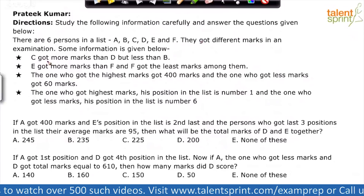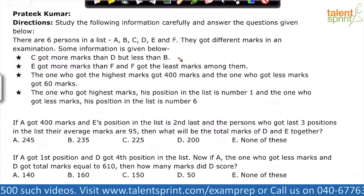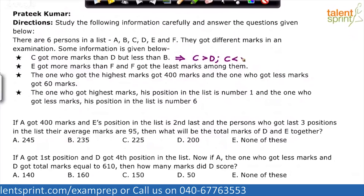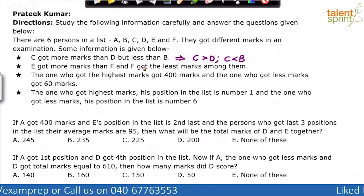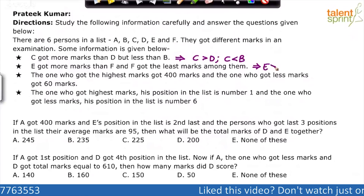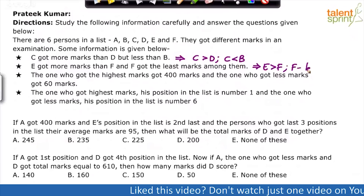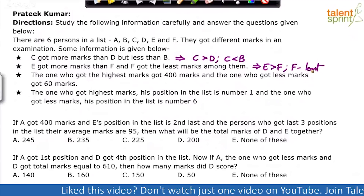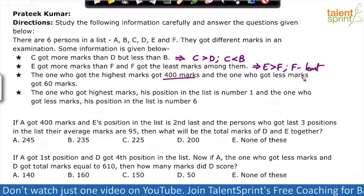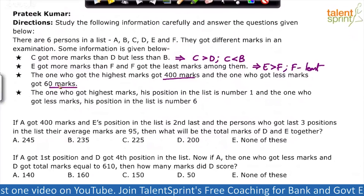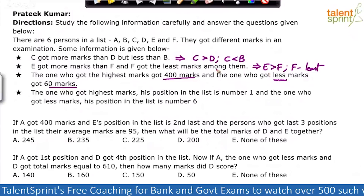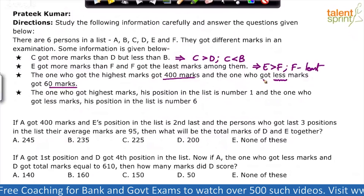The first statement says C got more marks than D but less than B — so C is between D and B. E got more marks than F, and F got the least marks among them, so F has the least marks and E has more than F. The one who got the highest marks got 400 marks, and the one who got less marks got 60 marks — there is some confusion about what 'less marks' means here.